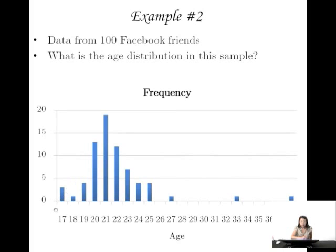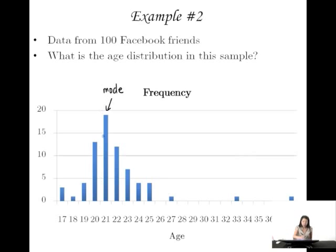In example two, we looked at the same data set and the age distribution in this sample. Here we don't have a uniform distribution — no matter how much you squint your eyes, you won't see a flat shape. You see a peak right here, and because of that peak — often called a mode, the most frequent value — this makes it a unimodal distribution.